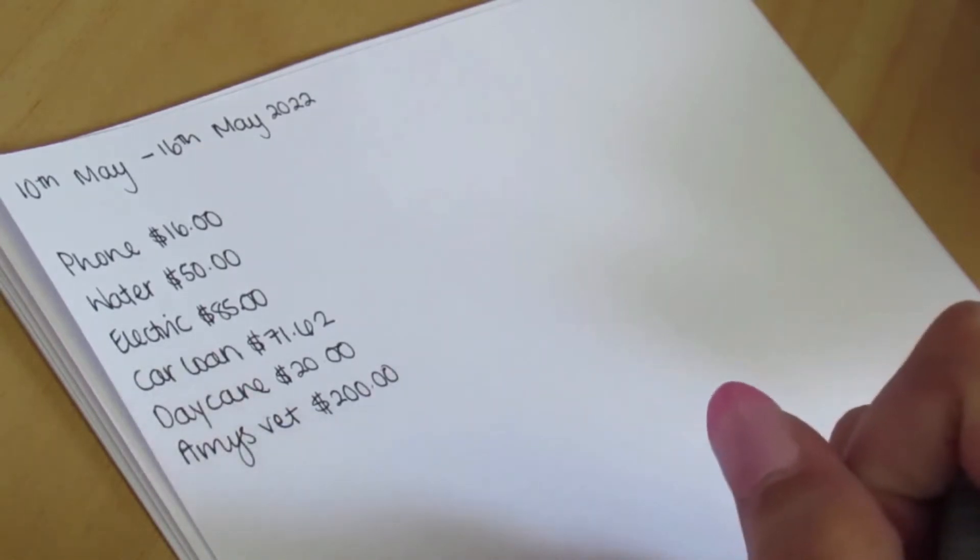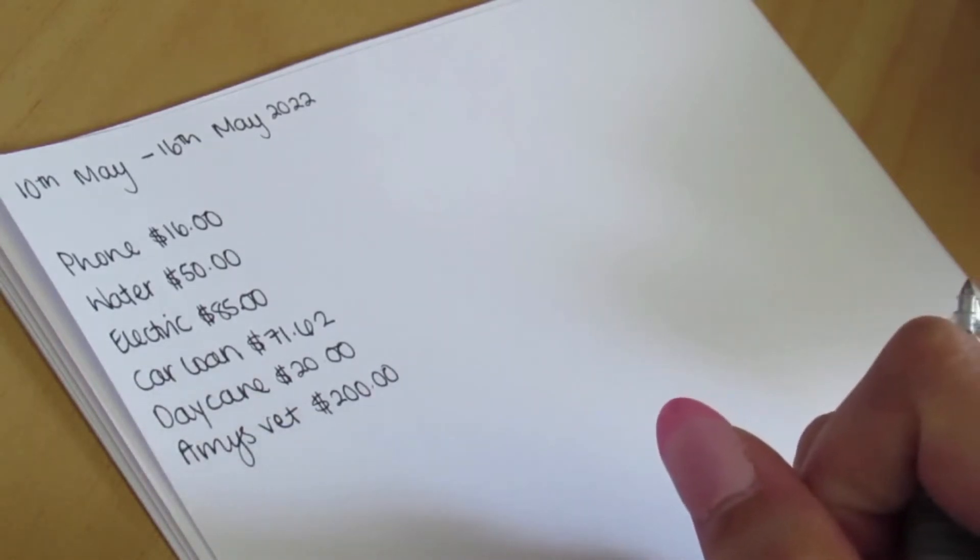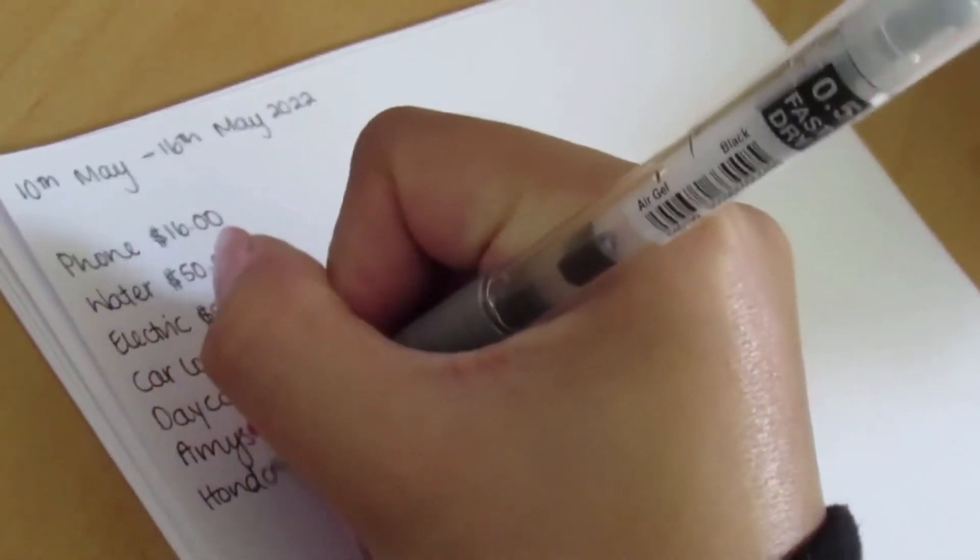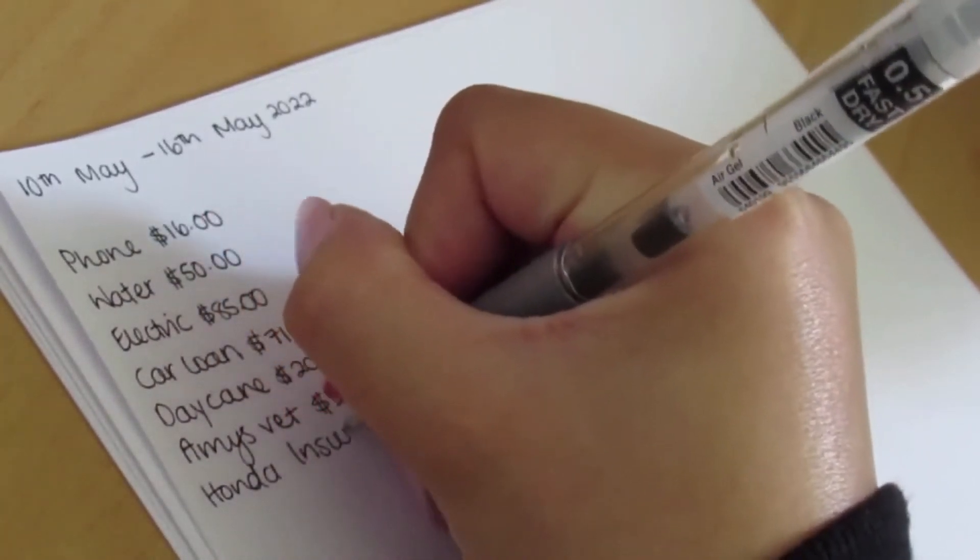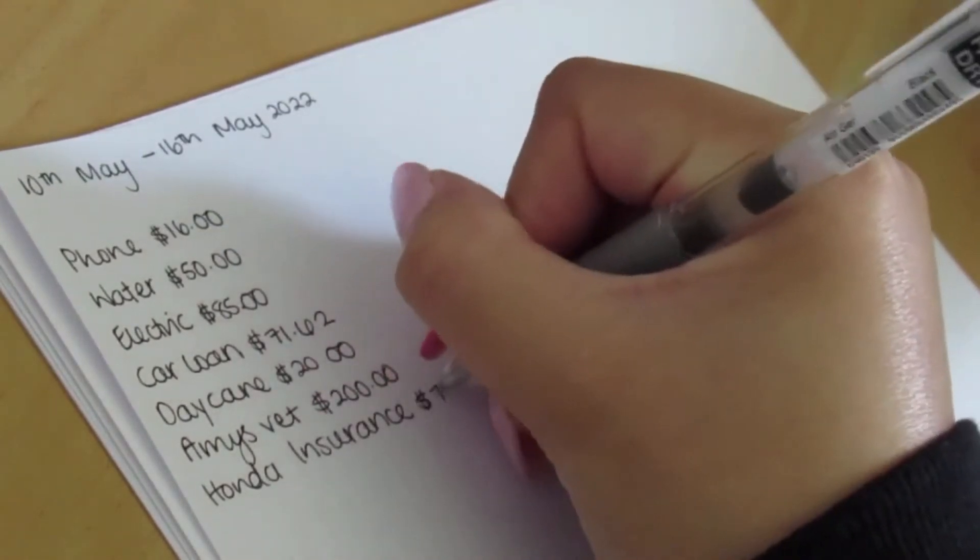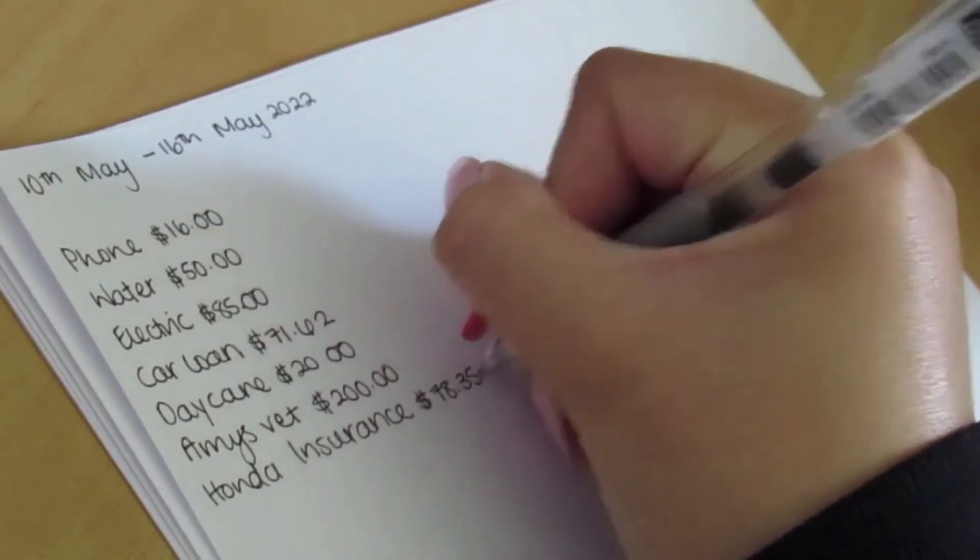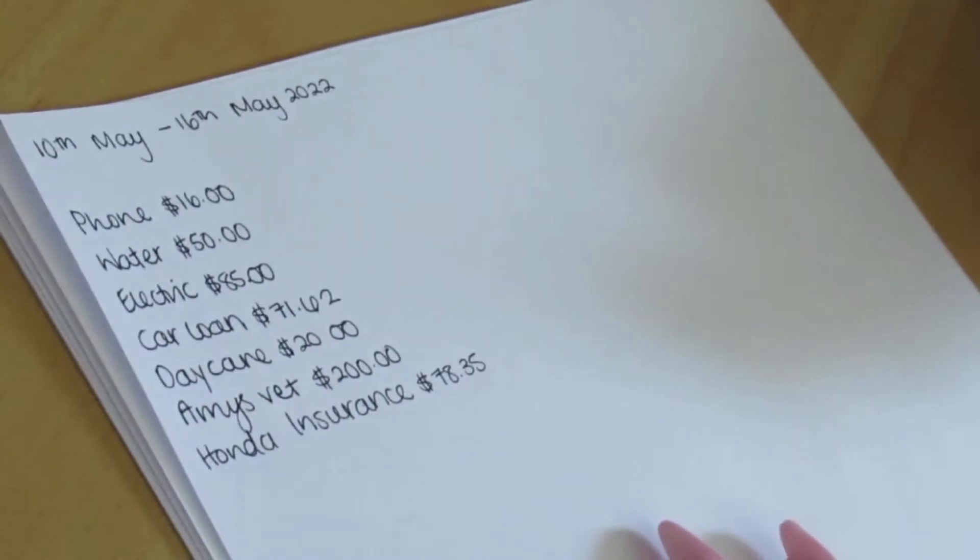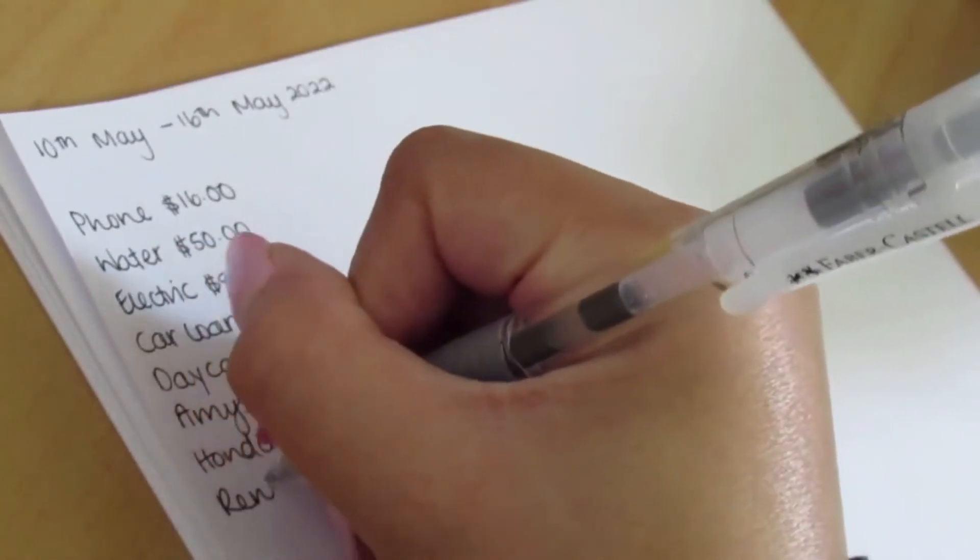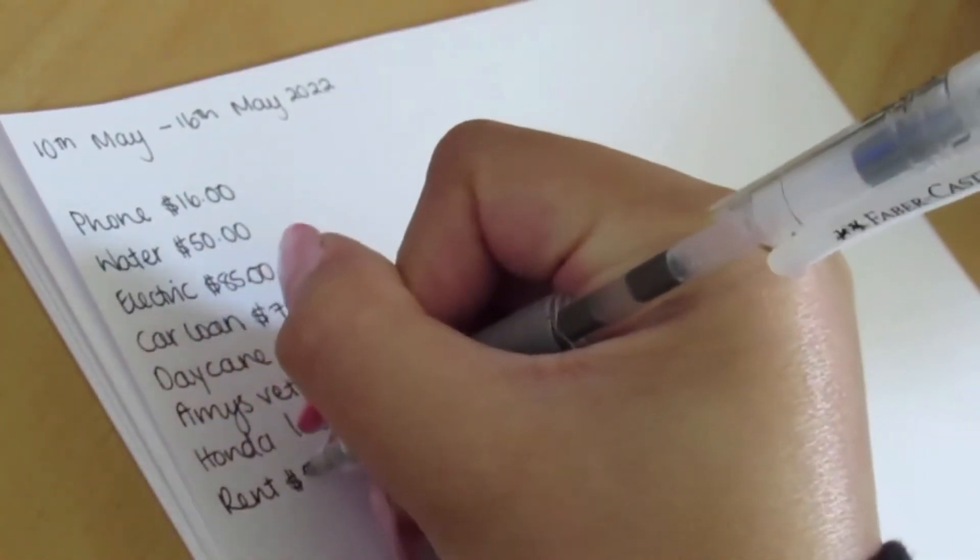Then we have my car insurance, and that is $78.35 this month.